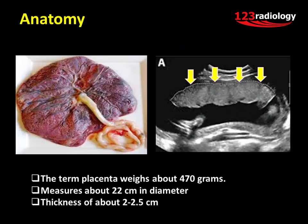Gross Anatomy: Typically, the placenta is discoid in shape. Normally it lies along the anterior or posterior wall of the uterus, and may extend to the lateral wall with increasing gestational age. The term placenta weighs about 470 grams and measures about 22 centimeters in diameter, with a thickness of 2 to 2.5 centimeters. Placental thickness is usually directly proportional to gestational age, and can often predict gestational weeks. The umbilical cord typically inserts at the center of the placental bulk.